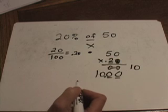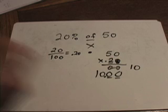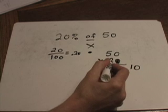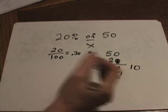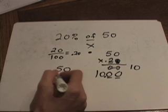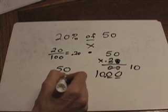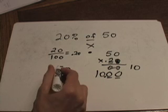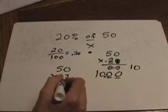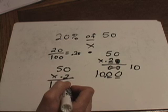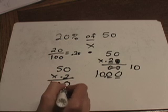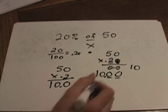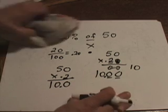A simpler way to solve this is to know that the trailing zero in 0.20 is meaningless — 20 hundredths is the same thing as two tenths, 0.2. So we can simply do 50 times 0.2: two times zero is zero, five times two is ten. Because there's one number past the decimal in the problem, we need one number past the decimal in the answer, and we get the same answer of ten.